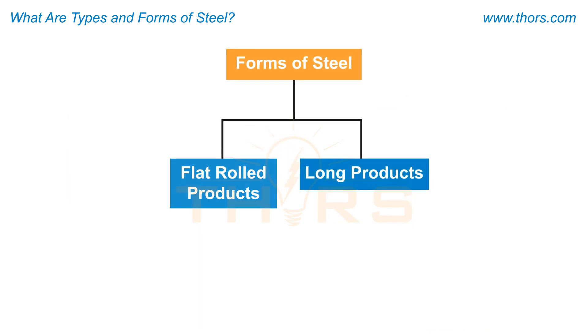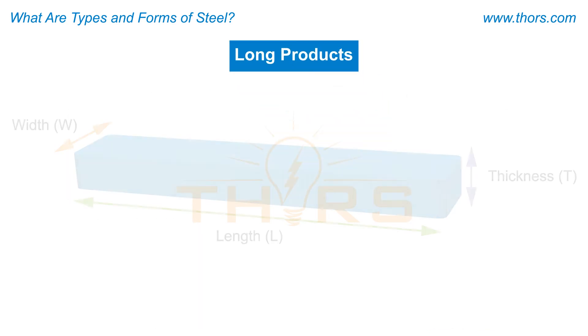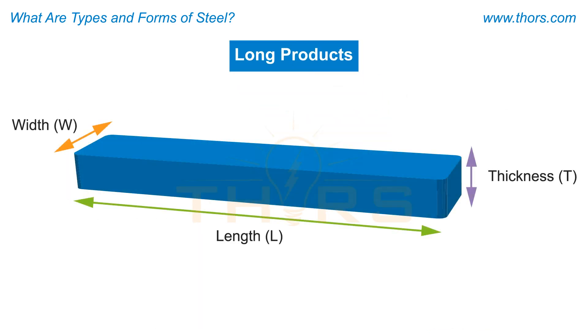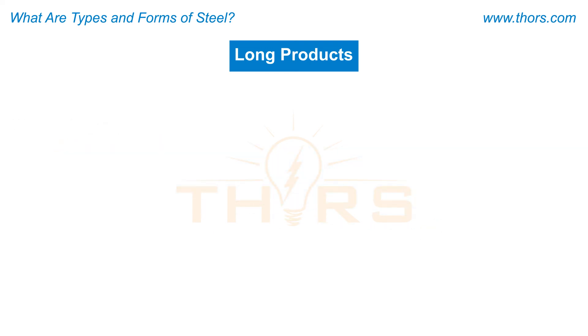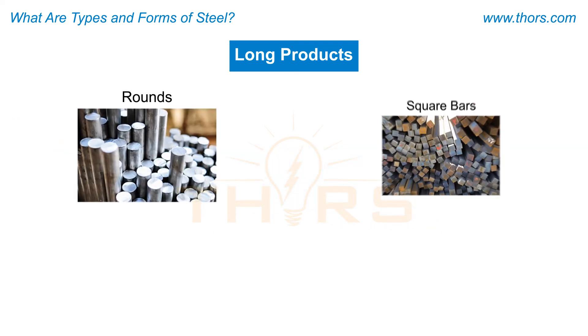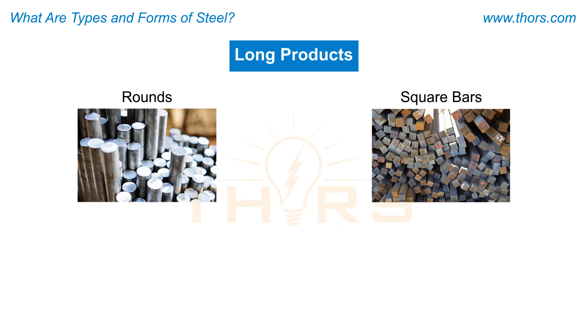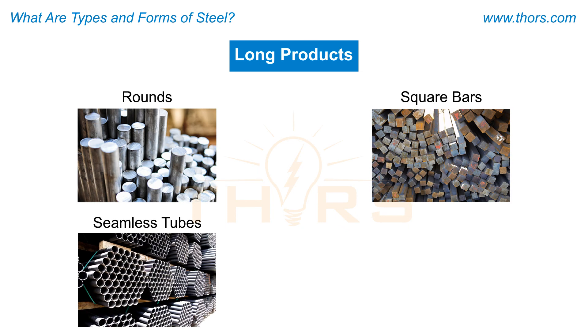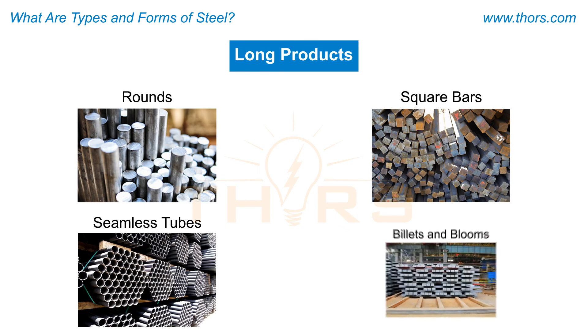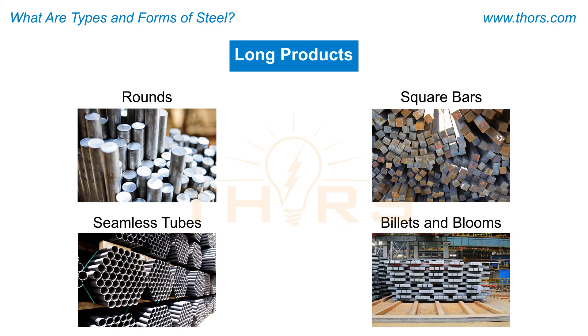Long products have widths and thicknesses of a similar dimension while the length varies. Common long products include rounds, square bars, rods, seamless tubes, billets, and blooms.